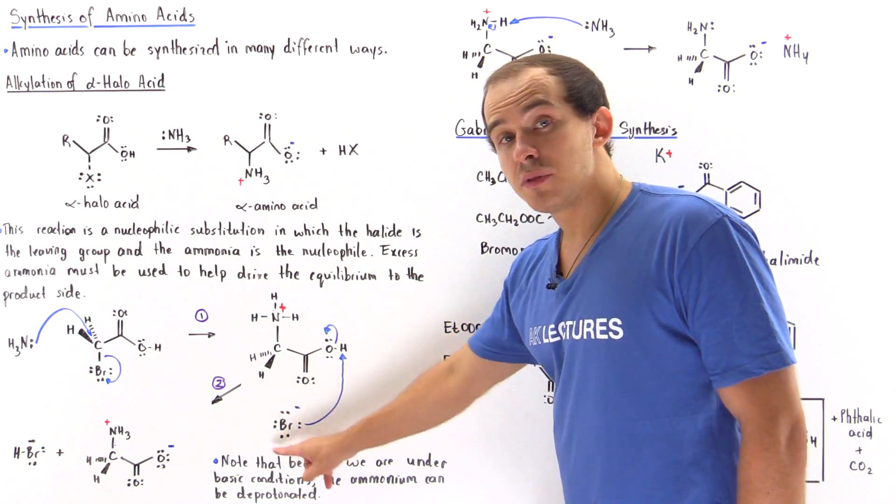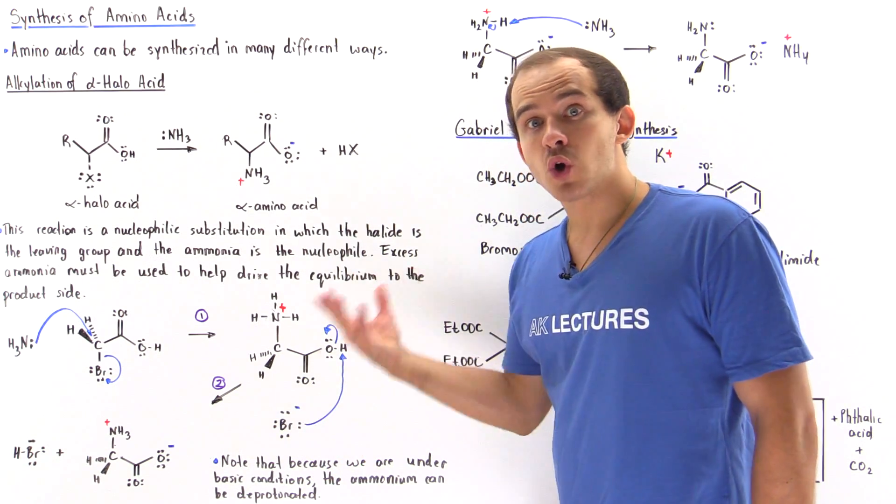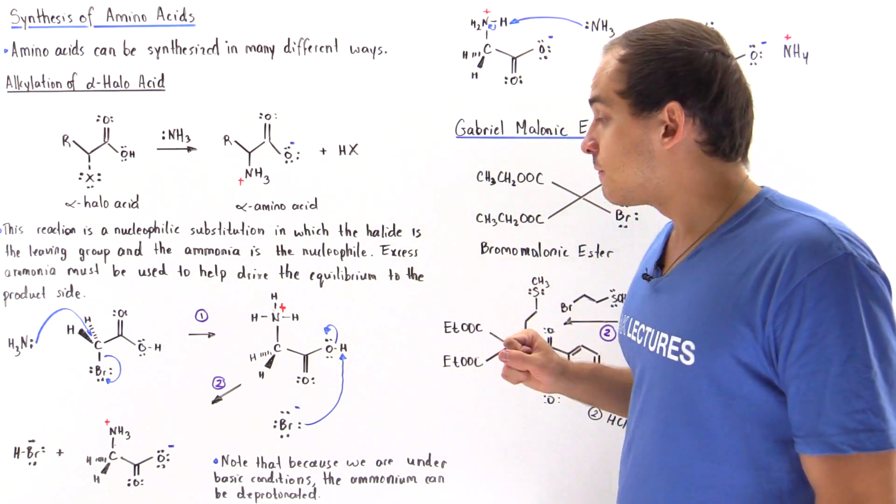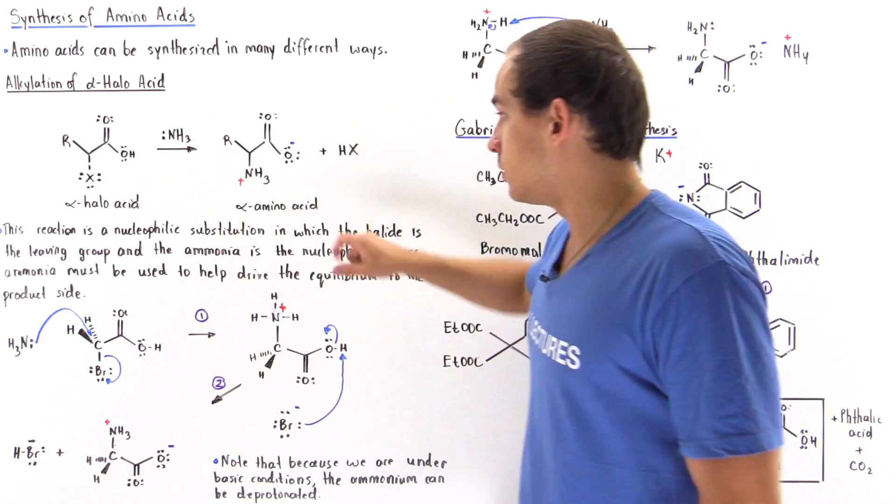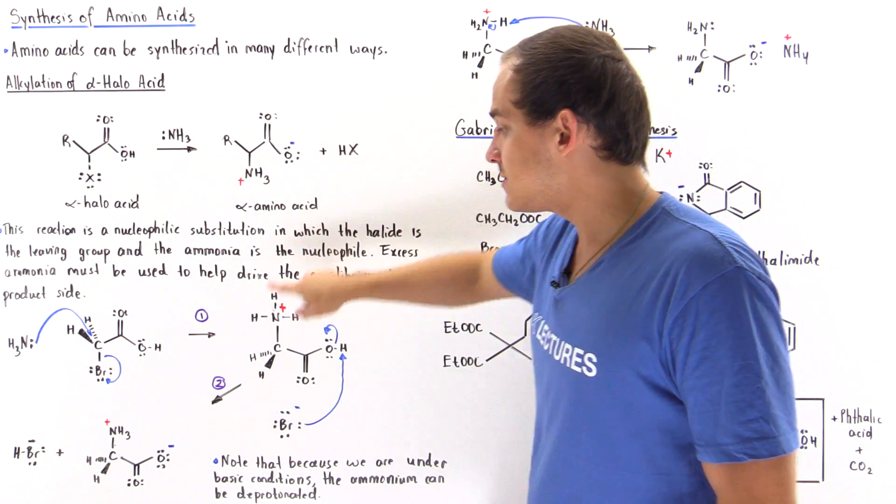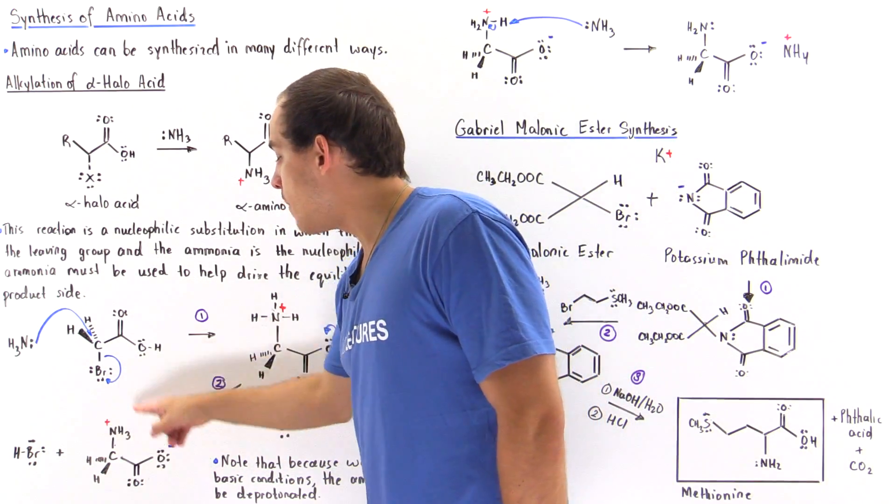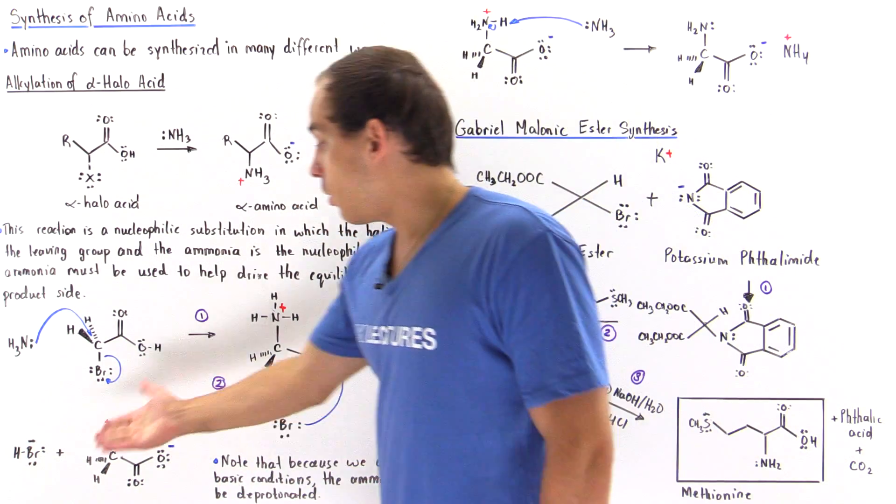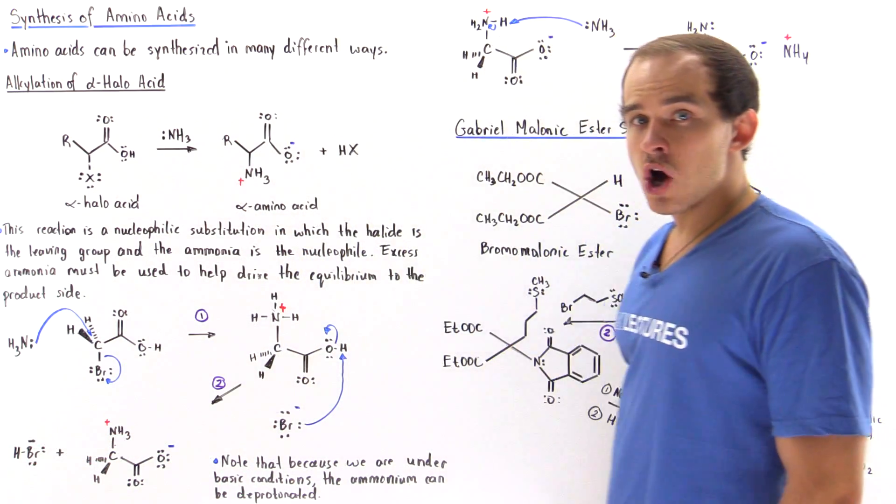And as soon as we displace this bromine, the bromine as a base will basically take away the H, forming this molecule, our alpha-aminoacid, that contains our ammonium, as well as this carboxylate ion. We also form this HBr.